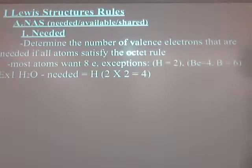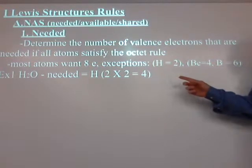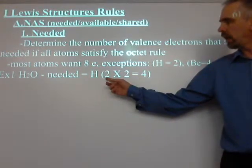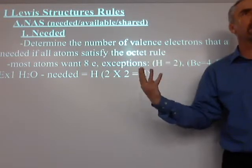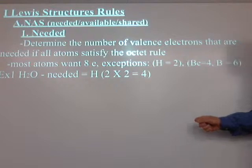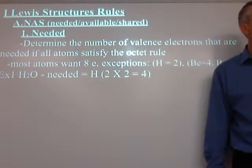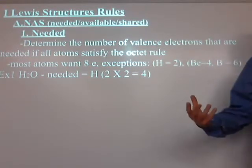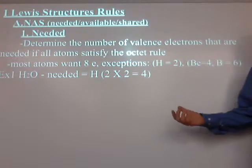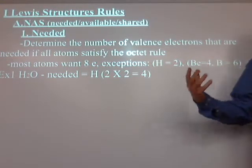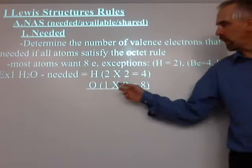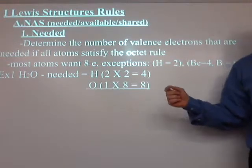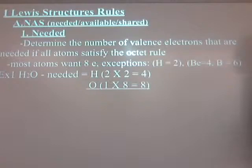For water, I've got two hydrogen atoms. Each one wants two electrons, so I need four electrons to make hydrogen happy. Oxygen wants eight electrons, and there's one oxygen atom. So the total number of electrons needed to make everybody happy would be 12 — it would give everybody what they wanted.